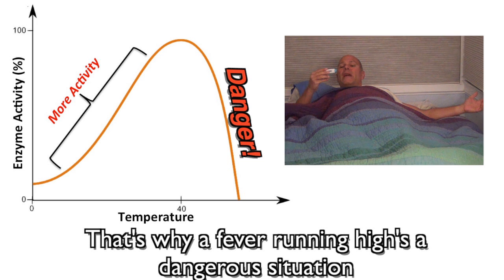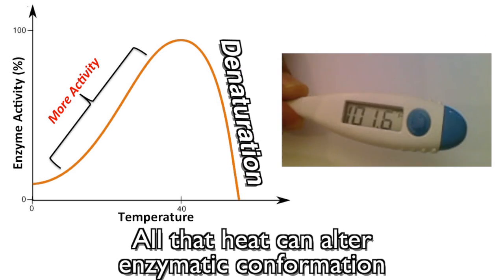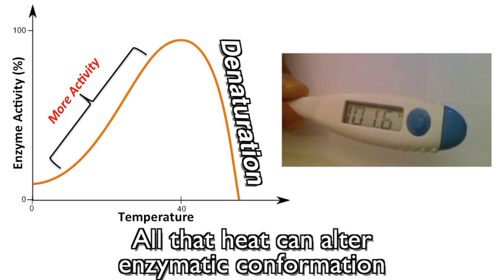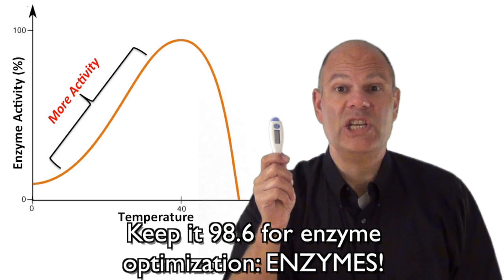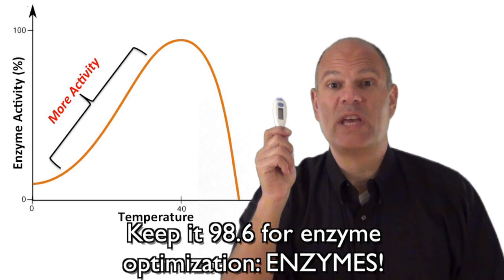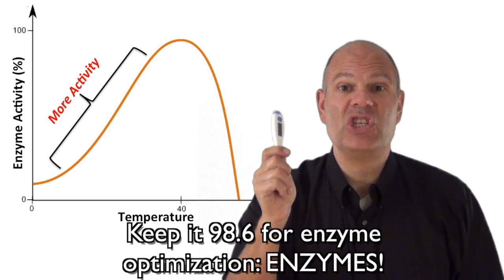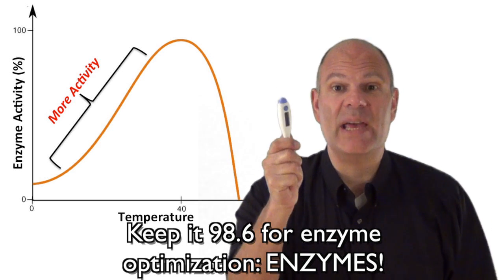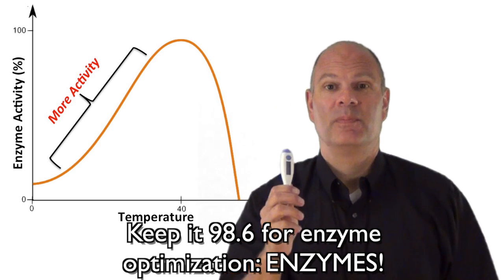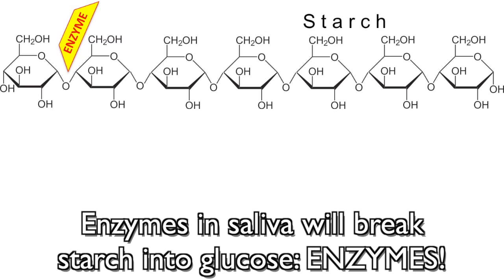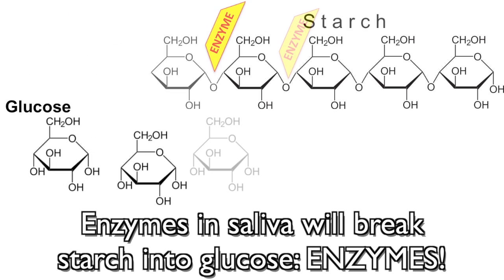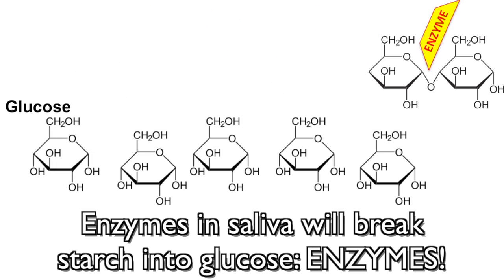That's why a fever running high is a dangerous situation — all that heat can alter enzymatic conformation. Keep it 98.6 for enzyme optimization. Enzymes in saliva will break starch into glucose.